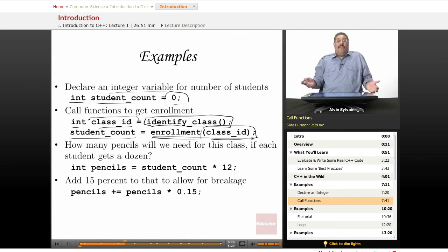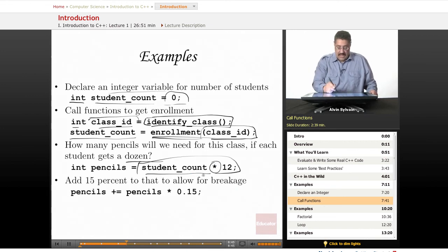And now this student count has been set to how many students are in the class identified by class ID. Now, we need to get pencils for this class. You have to write things down, you need to take notes. How many will we need? Well, we'll just say we need 12, we'll have a dozen pencils per student. So we'll take the student count, this is the multiply operator. This is an expression, takes the variable student count, multiplies it by the literal constant 12. And it'll do that arithmetic in the computer and take the result and assign it to this new variable called pencils. I could have said number of pencils, but I'm running out of space on this particular screen.